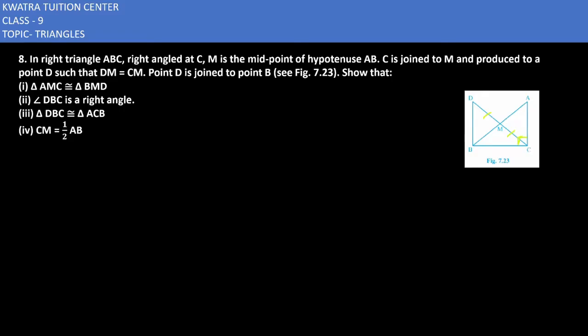Show that triangle AMC is equal to triangle BMD. First, let's start with this triangle and what to do with it. So I will be taking triangle AMC and triangle BMD. Now what will be the given part?